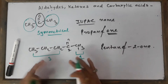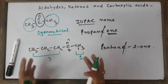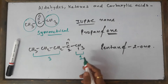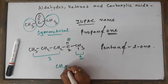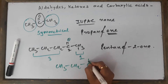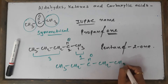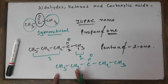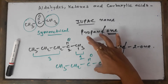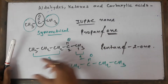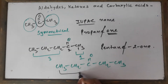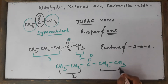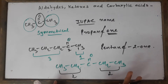Whenever you see ketones, they can show metamerism — different number of alkyl groups on either side. For example, if I ask you to write the metamer of this ketone, it would look like this: CH3, CH2, C double bond O, CH2, CH3. So we have five carbon atoms here and also five carbon atoms there. These are the two metamers of the ketone. In the first one, we have three alkyls on the left and one on the right, but in the second one, we have two on the left and two on the right. Various combinations are possible.